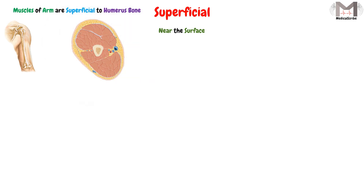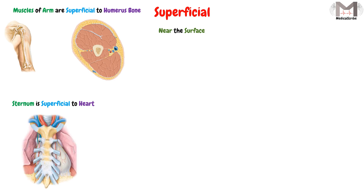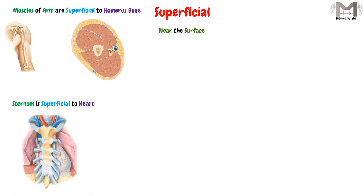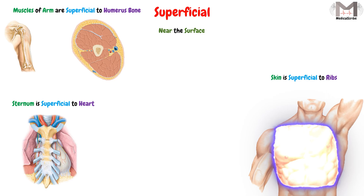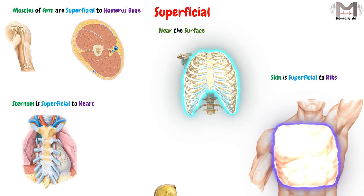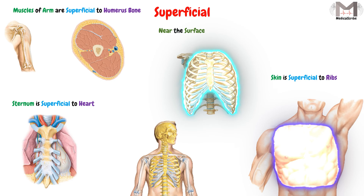Another example: if we say the sternum is superficial to the heart, that means the sternum bone will be in front of the heart, or nearer to the surface than the heart. And a final example: the skin is superficial to the ribs, meaning the skin is closer to the body surface than the ribs. So superficial means near the surface of the body.